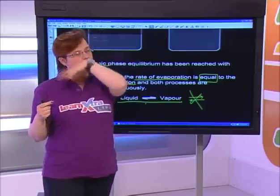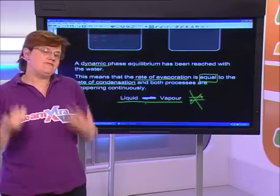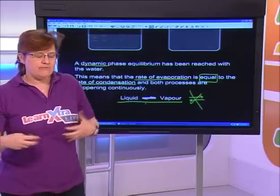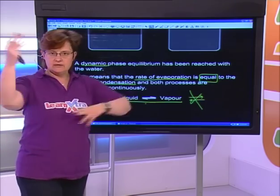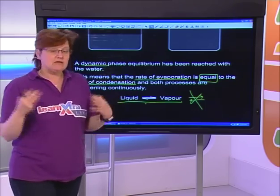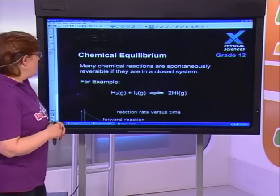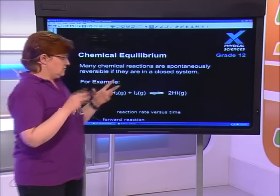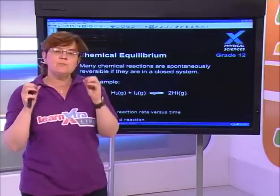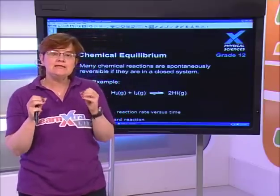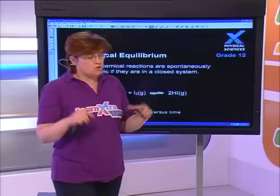The half arrows show the forward process going right and the reverse process going left, both happening at the same rate at the same time. This is important for chemical equilibrium — if we can get phase change happening at the same rate in both directions, then maybe the same can happen with chemical reactions. Chemical reactions can only reach this equilibrium state if they are spontaneously reversible.